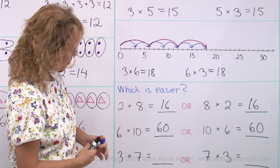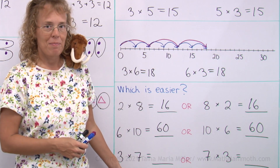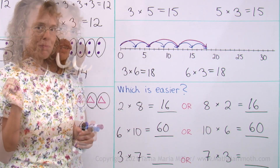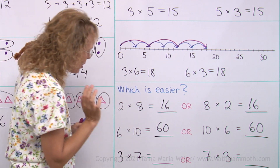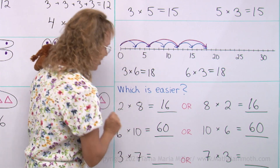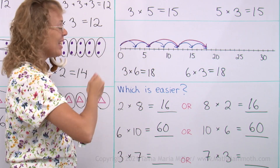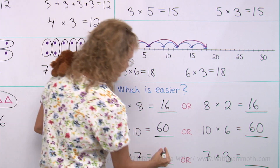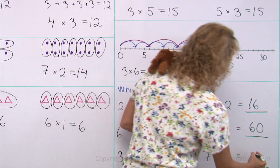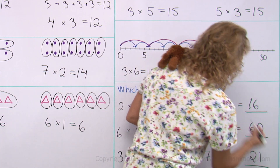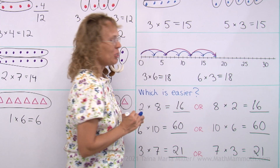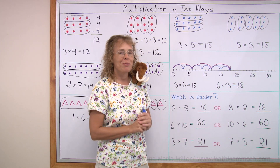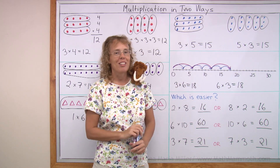One more: three times seven or seven times three. Obviously it is easier to add just seven and seven and seven, and you will get twenty-one. So always keep that in mind when solving multiplication problems. And we're all done with this lesson.